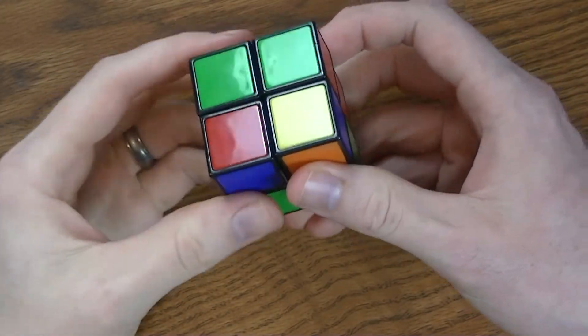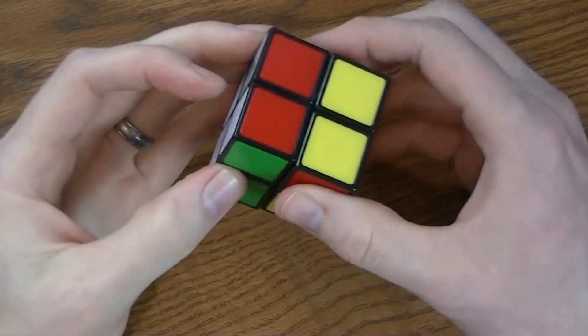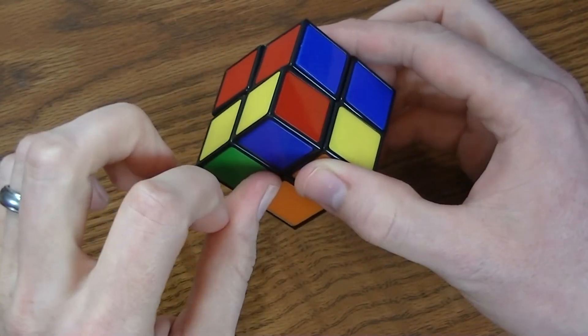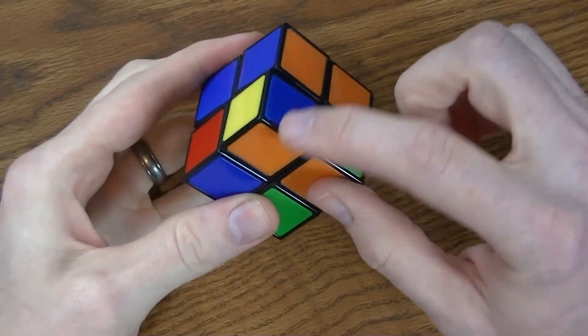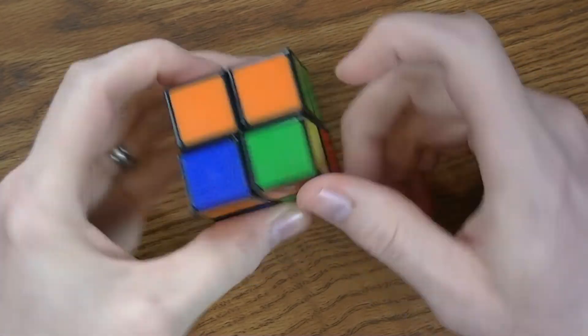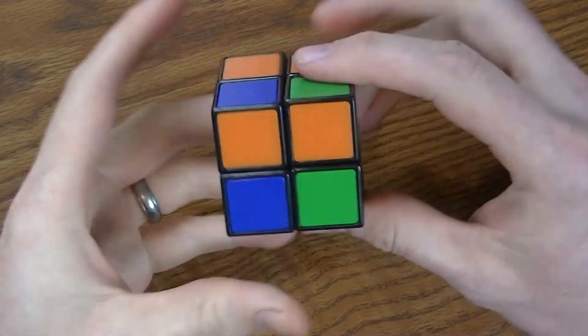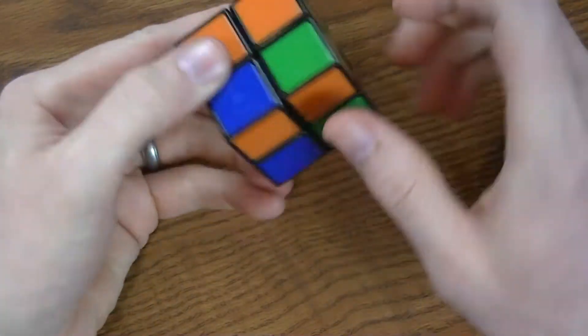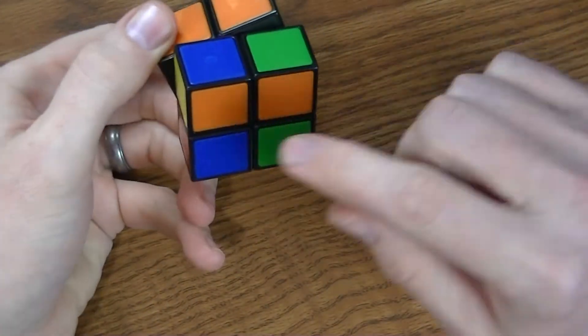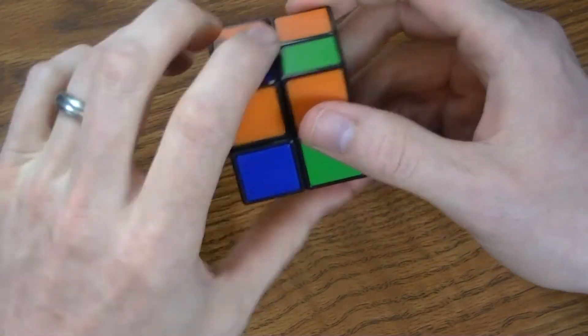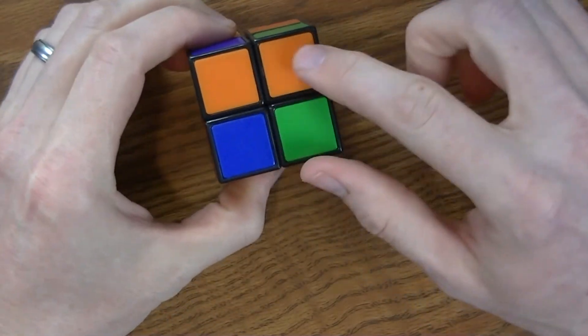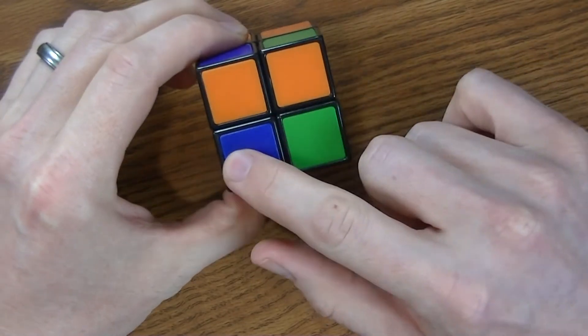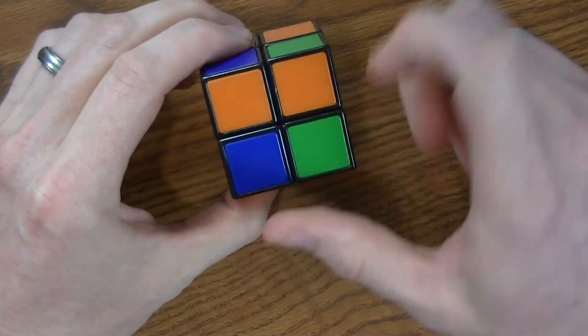Now that we have the pieces in the correct locations, green-red, red-blue, blue-orange, and green-orange, they're all in the correct locations, now I'm going to show you the algorithm for turning the bottom pieces while they stay where they are. The key here is that this algorithm will turn three pieces, these three pieces, and leave this piece exactly where it is.